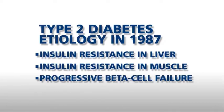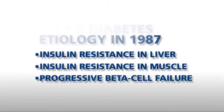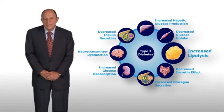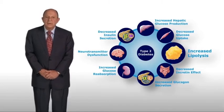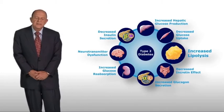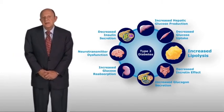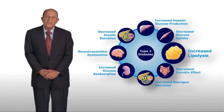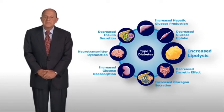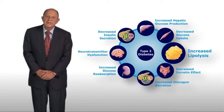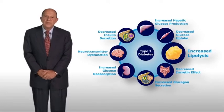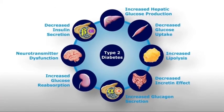However, we know that there are at least five additional defects that need to be addressed. To the right, we know that the fat cell is very resistant to insulin. Insulin is an antilipolytic hormone — it blocks the breakdown of triglycerides. Because the fat cell is resistant to insulin, it is constantly breaking down the triglycerides and releasing free fatty acids into the bloodstream. Elevated free fatty acid levels lead to insulin resistance in the liver and muscle, increased hepatic gluconeogenesis, and decreased insulin secretion. Thus, it exacerbates the three core defects present in individuals with type 2 diabetes.